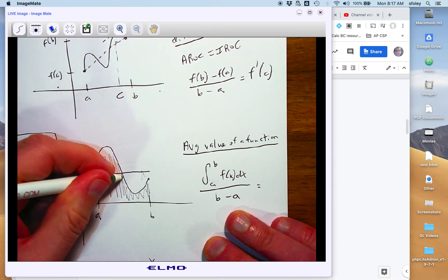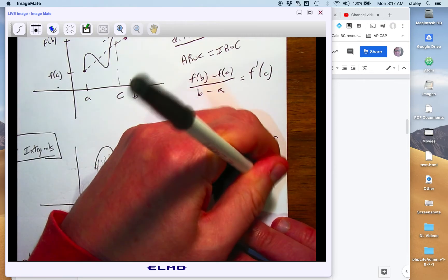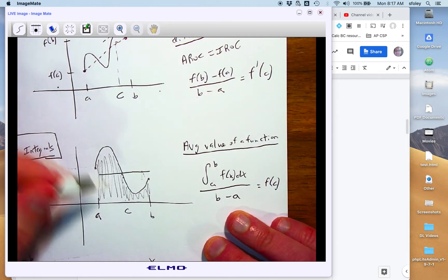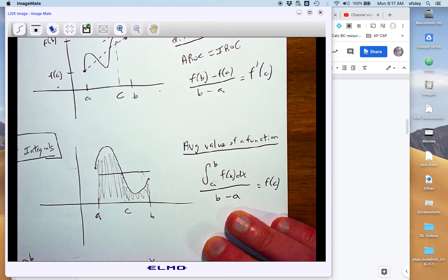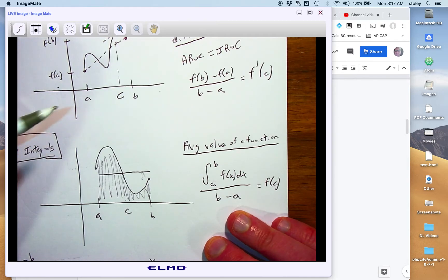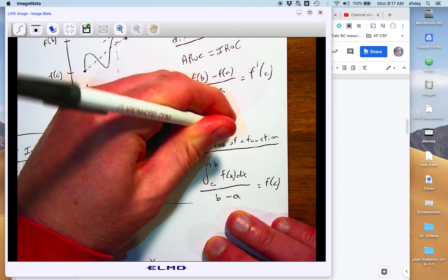Again, we don't know exactly where, we just know it exists, but we know there's a place where the value of the function equals that average value. And so F of C equals that average value. And that makes sense. The only way that wouldn't happen, and this has to be a continuous function also, I should have said that.